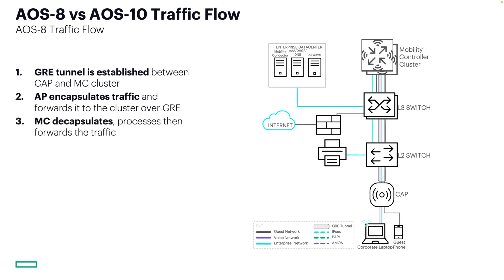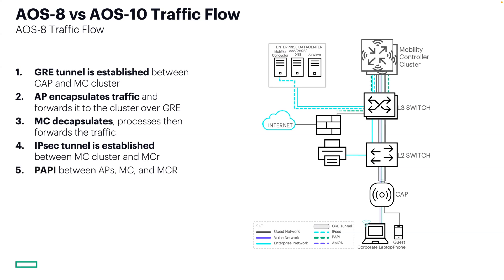IPsec secures all control plane traffic exchanged between the mobility conductor and mobility controller. Additionally, two management protocols are also used: PAPI between the AP, mobility controller, and mobility conductor, and AMON sent from the mobility controller and mobility conductors to AirWave.